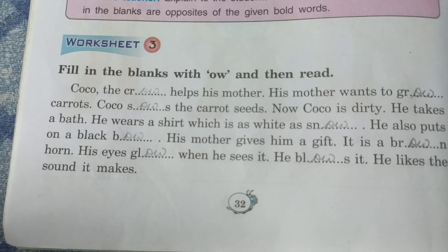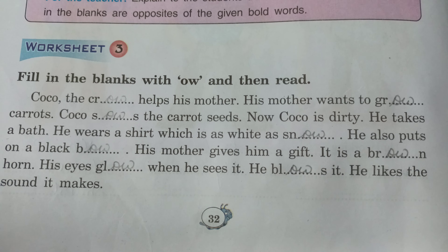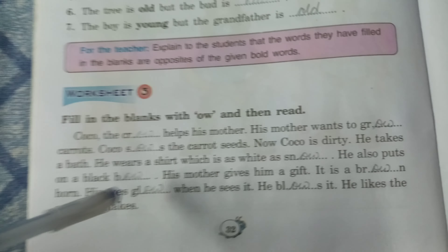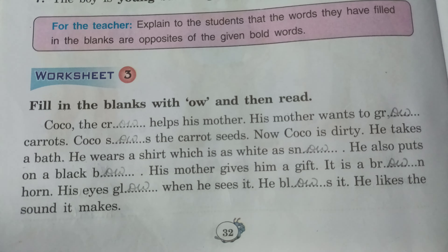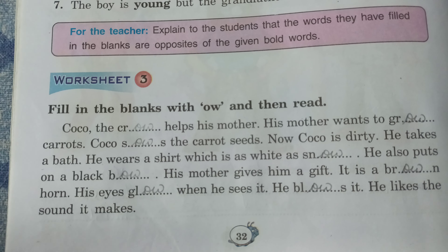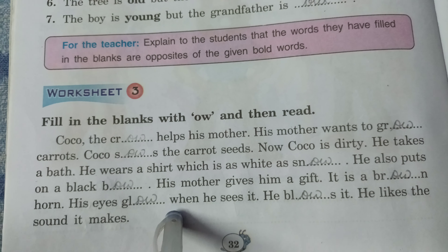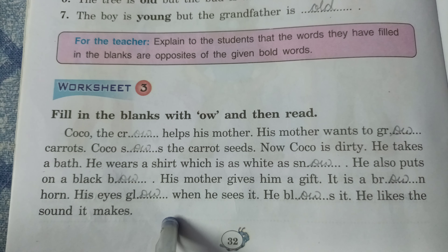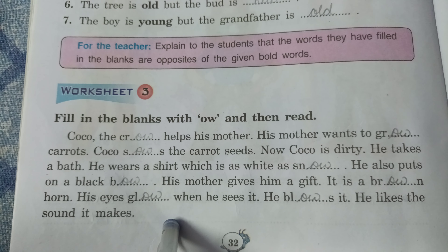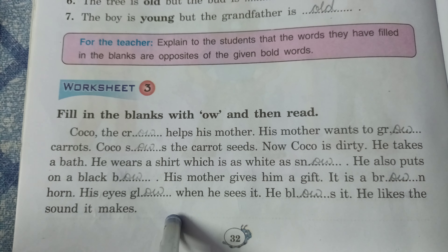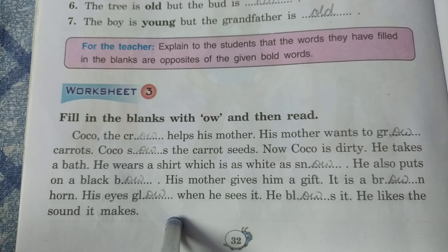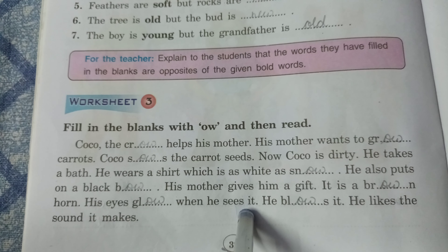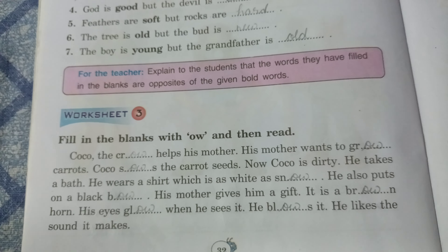Now see here — this is a very easy exercise. Fill in the blanks with OW and then read. Let's read the story: He also puts on a black bow. His mother gives him a gift — it is a brown horn. His eyes glow when he sees it. He blows it and he likes the sound it makes.